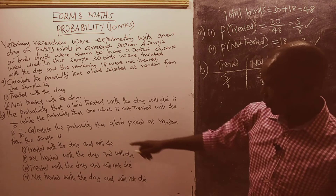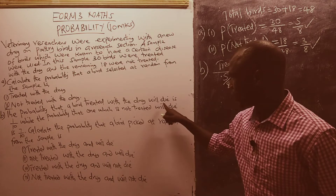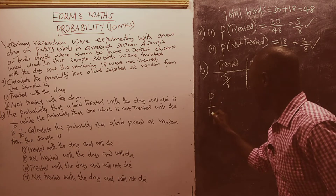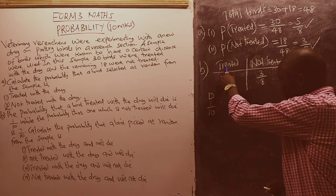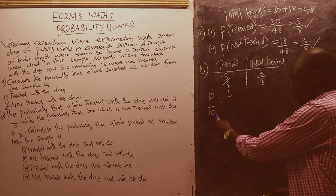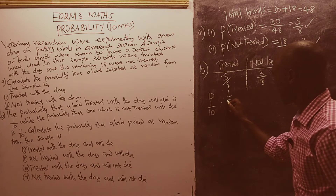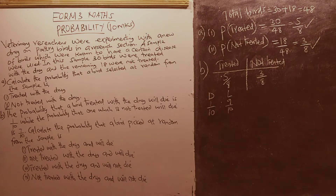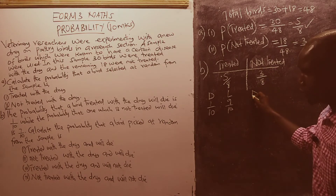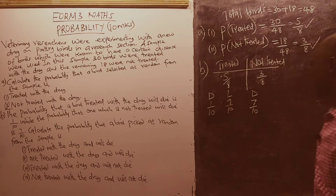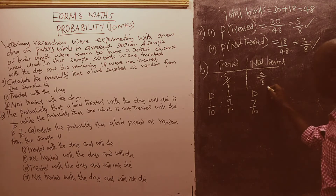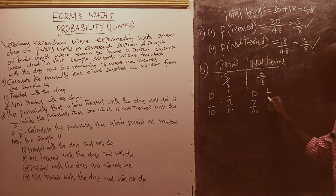If a bird is treated, the probability that it will die is 1 over 10. There is also a probability that a bird is treated and will not die — meaning it will live. Since the probability of dying is 1 over 10, the probability of not dying equals 9 out of 10. For a bird not treated, the probability of dying is 7 over 10, meaning the probability of living or not dying will be the remaining 3 out of 10.